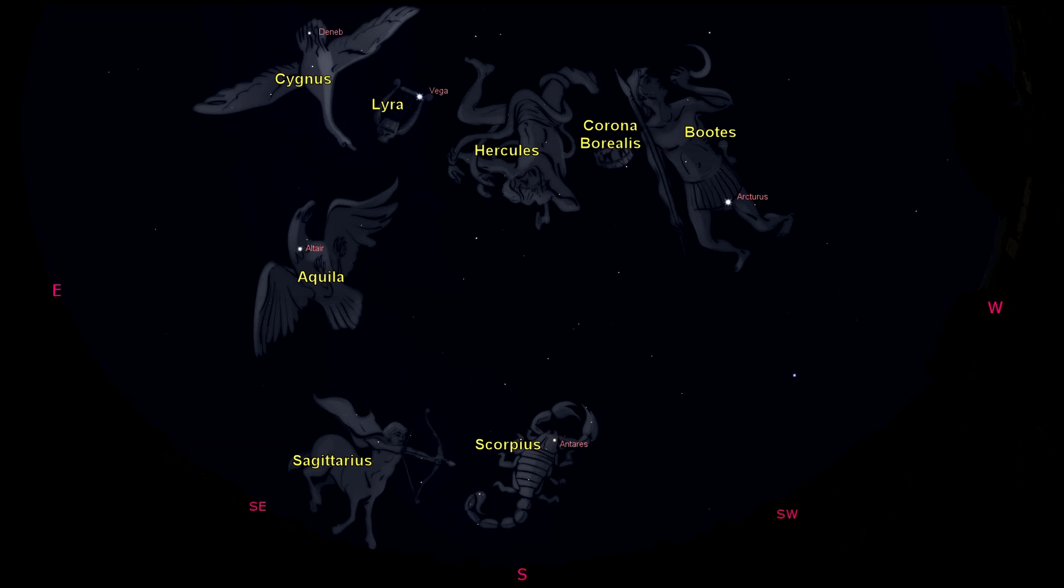Looking down toward the south, we have the very famous constellation Scorpius the Scorpion during our summer season, marked by the bright reddish-colored star named Antares, which actually means rival of Mars because so many people confuse it for the red planet.